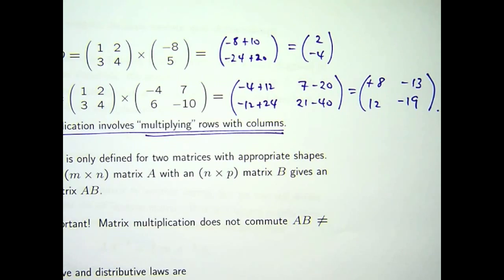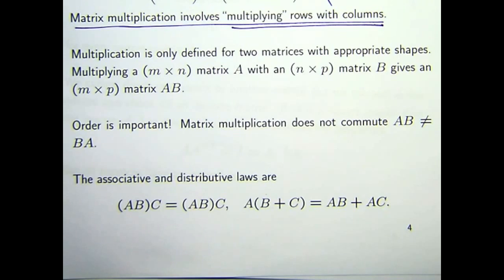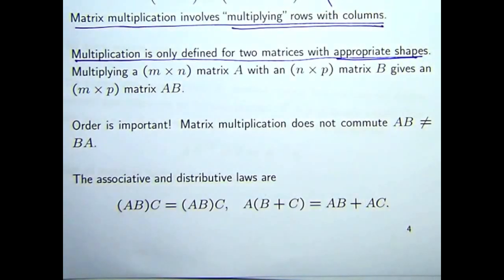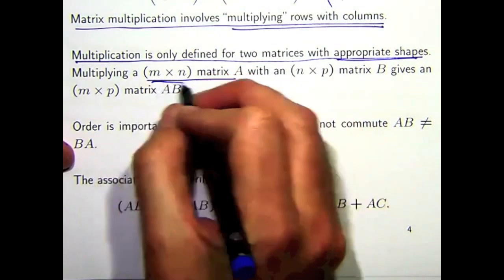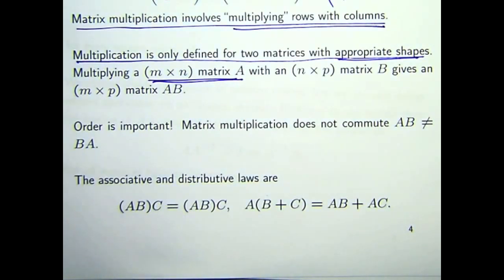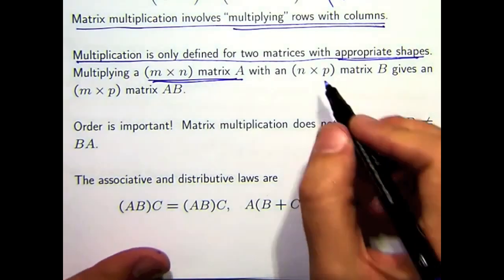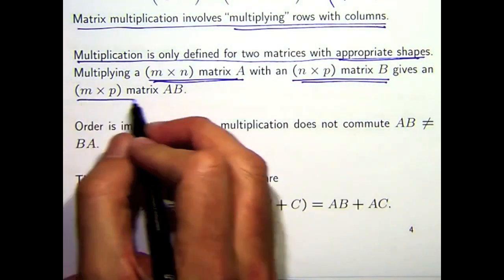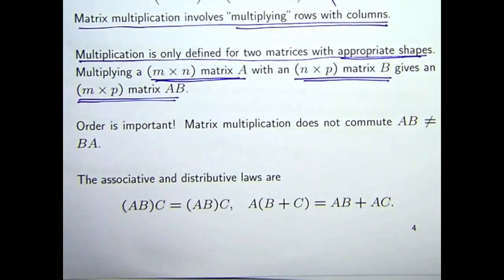So, in that case, we get a matrix which is the same size as the two things we are multiplying together. Now, there is a rule for kind of predicting what size the product of two matrices will be. And also, whether or not the multiplication makes sense. And it's got to do with the size of the matrices involved. So, essentially, multiplication is only defined for two matrices with appropriate shapes. So, suppose I've got a matrix A that has m rows and n columns. And I multiply that with another matrix B, which has n rows and p columns. Then the product is well defined. And it gives a matrix of this size.